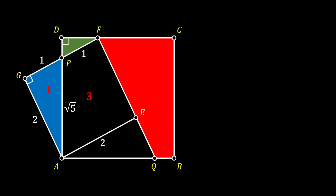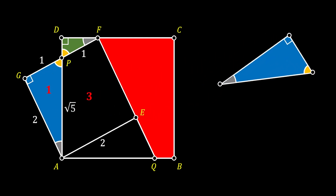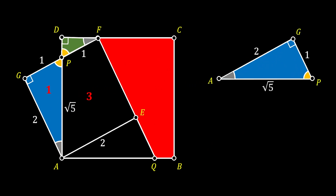Now let's have a look at the small triangle PFD. This is also a right triangle. You can probably notice that the angles at the point P for the big blue triangle and the small green triangle are the same. This leads us to conclude that the other angles — the angle at point F of the small triangle and the angle at point A of the big triangle — are also identical. Since those two are similar, we can use the rule of similarity: the relation between their hypotenuses FP and AP is equal to one over the square root of five, and this value represents the factor of similarity between those two triangles.